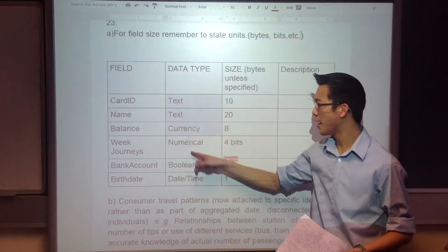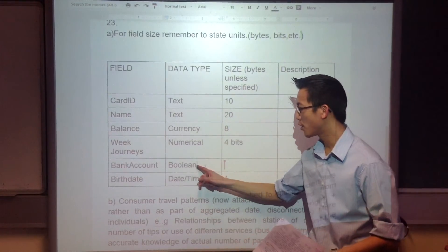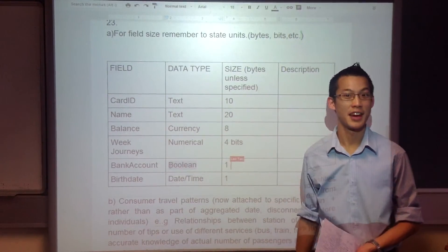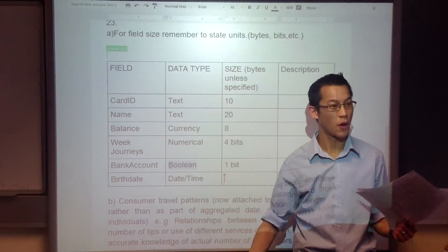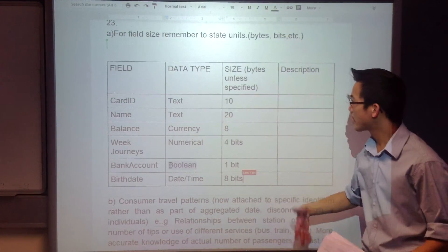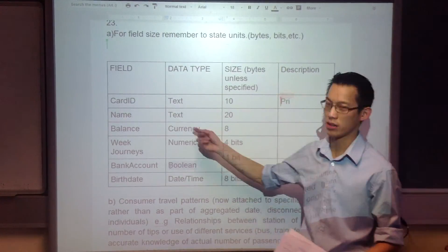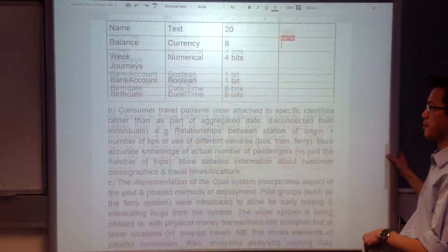Now, data type, this was mostly well done, there aren't too many things to get wrong. Some of you, though, you forgot about the boolean data type, you forgot it existed. So that's just a yes, no, zero, one, true, false kind of field, very very useful. Size, again, no problems. Description, so long as you've got the right fields, most people were fine on there. But let's move on to part B.